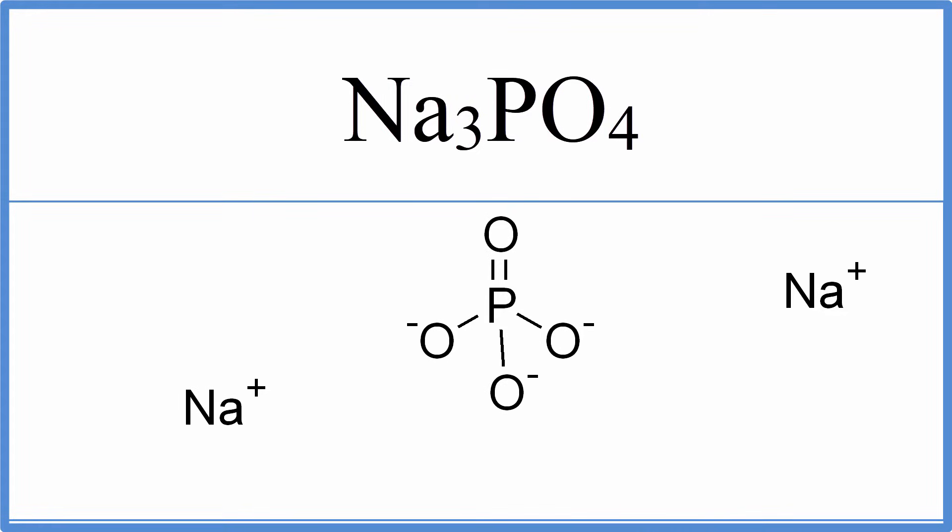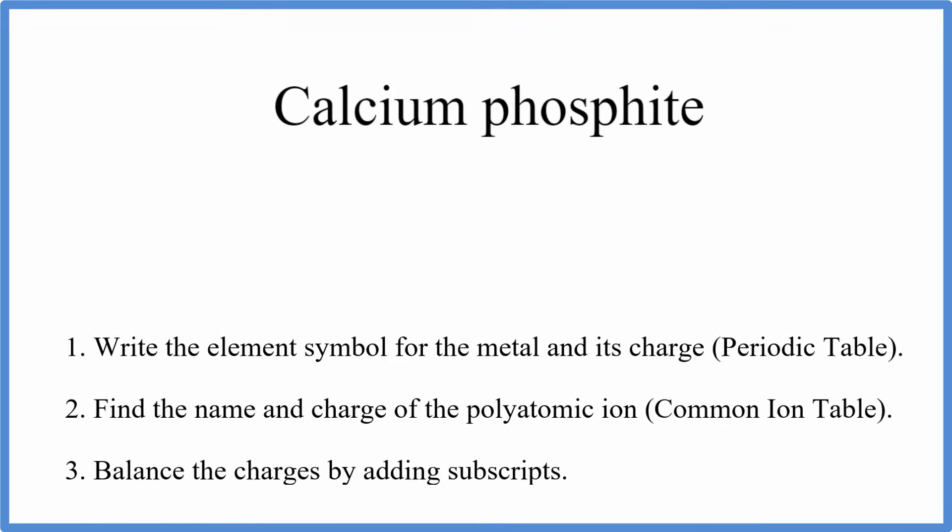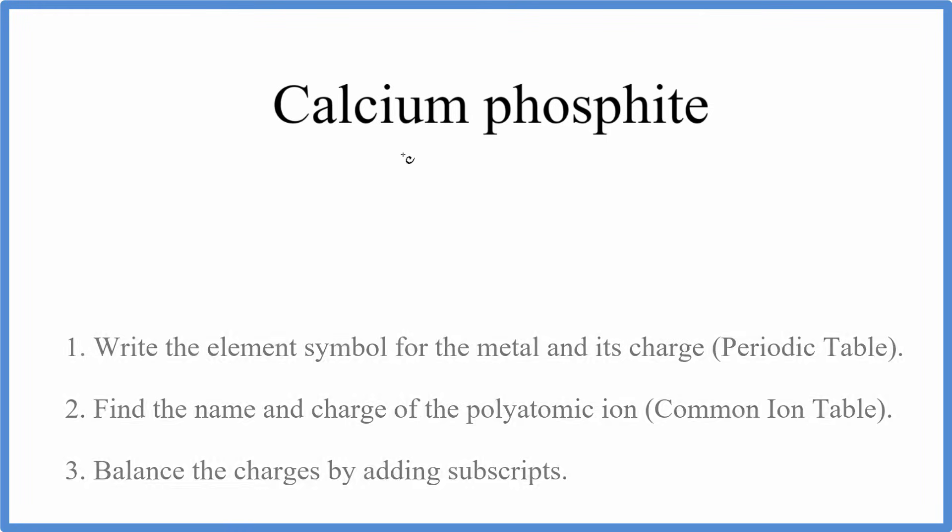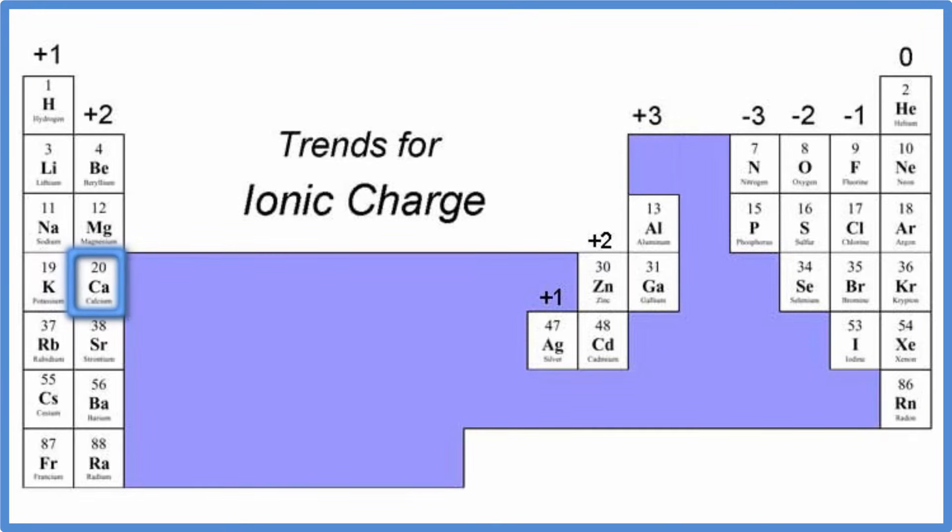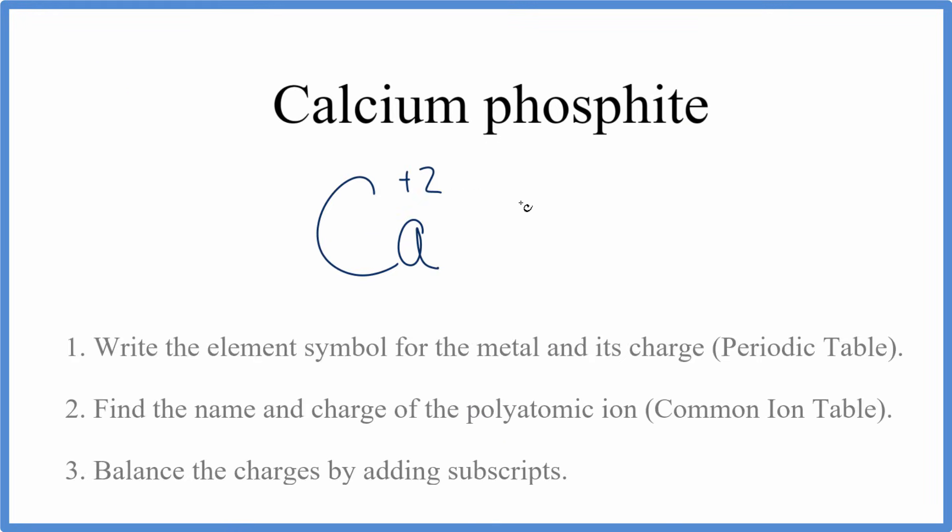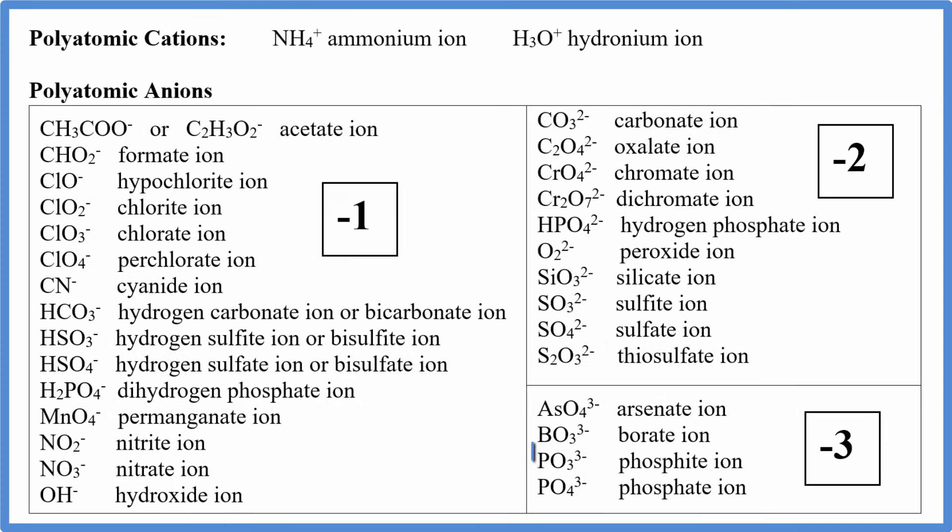Let's try to do one that's a little different, calcium phosphite. So pause and try to write the formula for calcium phosphite. For calcium phosphite, we have our metal, that's the calcium, and then the phosphite, that's our polyatomic ion, and we know that it ends in I-T-E. So when you see I-T-E, you're thinking polyatomic ion. We go to the periodic table, calcium is CA, and it has a plus 2 charge. The phosphite, we look it up on the common ion table, that's PO3 3 minus.